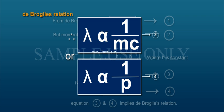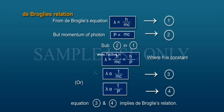lambda is directly proportional to 1 by mc, or lambda is directly proportional to 1 by P. This is de Broglie's Relation.